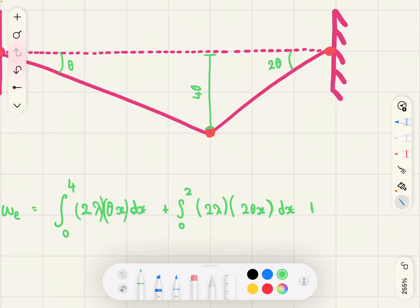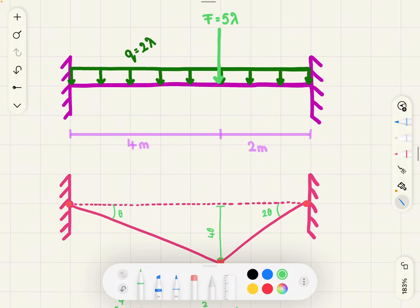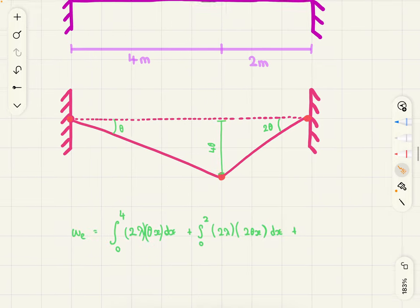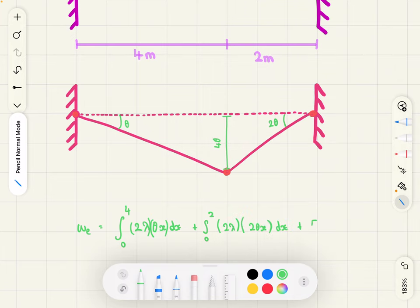And we also have not only the distributed load acting, but also the point load of 5 lambda. So, the work done externally due to the point load, it's going to be the force of 5 lambda, times by the distance across which it's acting, so 4 theta. So, 5 lambda, 4 theta.